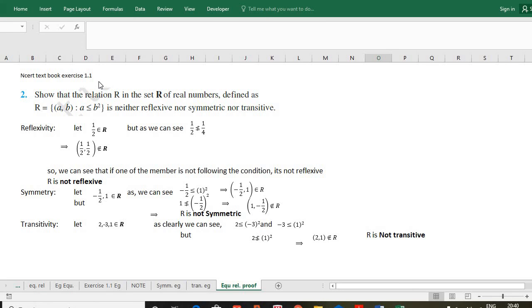In exercise 1.1 we have question number 2: show that the relation R in the set of real numbers, where R is defined as (a,b) such that a ≤ b², is neither reflexive nor symmetric nor transitive.